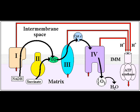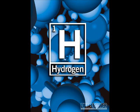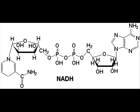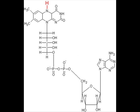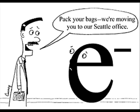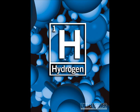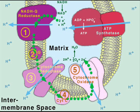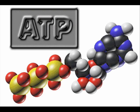Then you go to the ETC. It uses stored energy from hydrogen. It carries NADH and FADH2. Electrons are removed from hydrogen atoms, then pass through the cytochromes to get ATP.